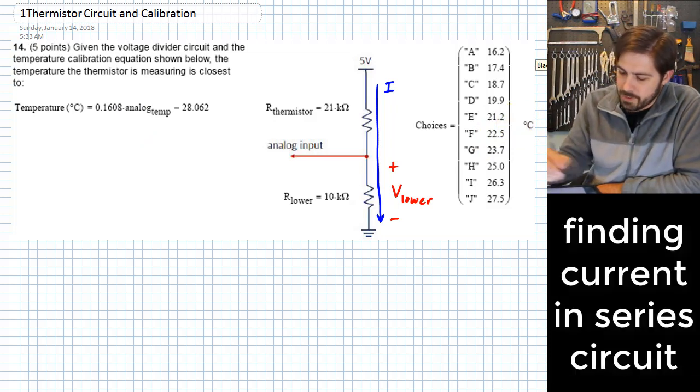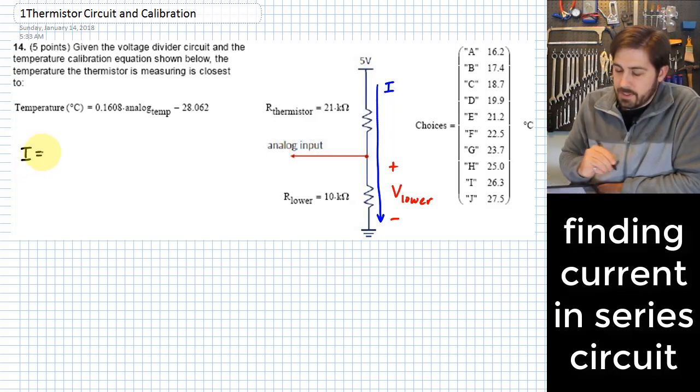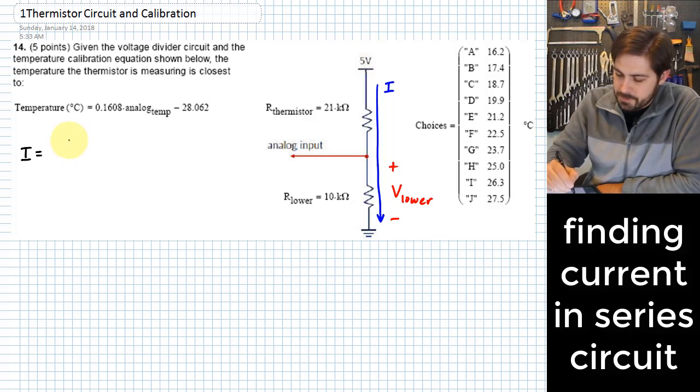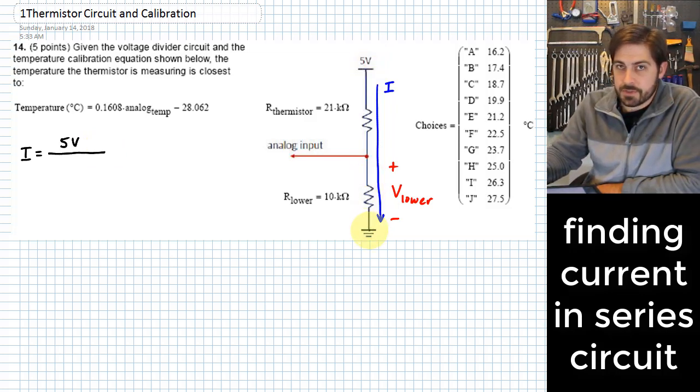Alright, so first of all, this current is really just going to be equal to the voltage, 5 volts, divided by the total amount of resistance from the 5 volts to ground, which is just going to be the sum of 21 kilo ohms and 10 kilo ohms, because this is just a series circuit.